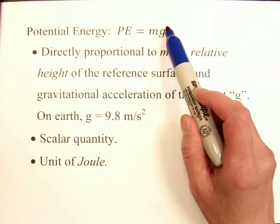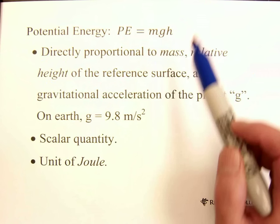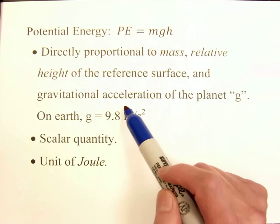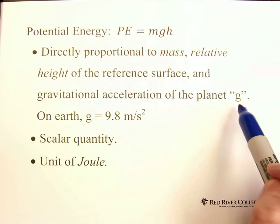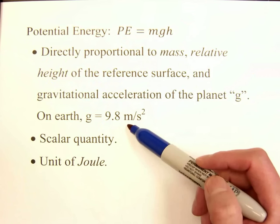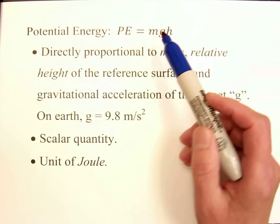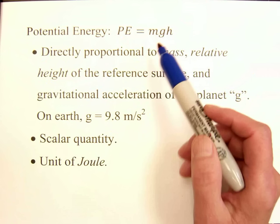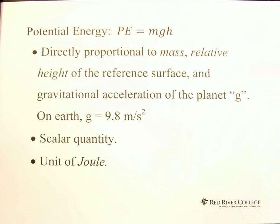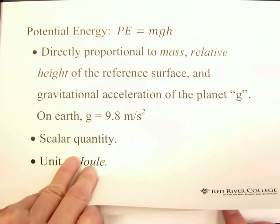The relative height of the reference surface. The h is the height from the reference surface and the gravitational acceleration of planet G. On Earth, G equals 9.8 m per second squared. Also, potential energy is a scalar quantity and with unit of joules. Let's see another example.